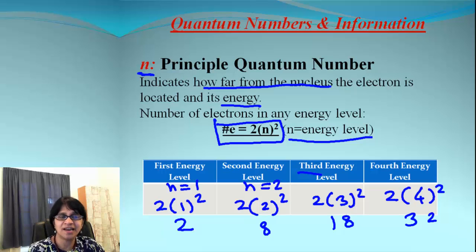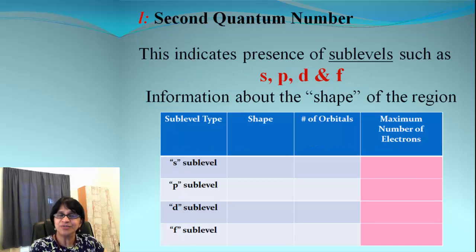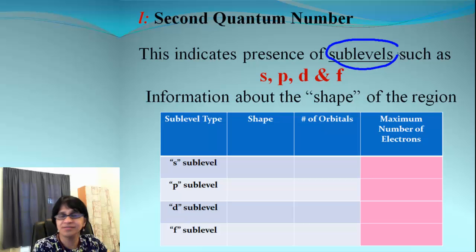Now how are these electrons arranged in that principle level? We are going to find that out in a minute. So we move on to second quantum number. This quantum number has sub levels, just like our apartment, our house will have rooms. And they are classified as S, P, D, and F.